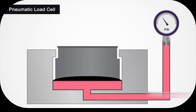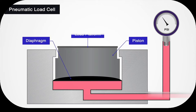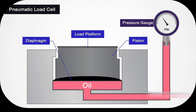A hydraulic load cell works using fluid - whether water or oil. These load cells are similar to pneumatic load cells but use pressurized liquid instead of air. A hydraulic load cell consists of an elastic diaphragm, a piston with a loading platform on top, oil or water inside the piston, and a Bourdon tube pressure gauge.